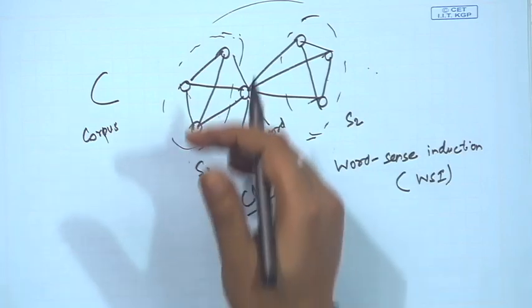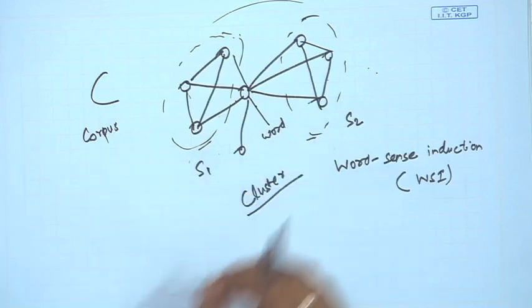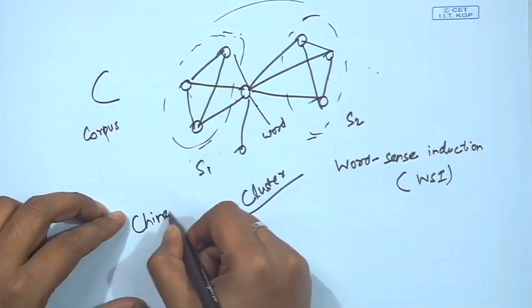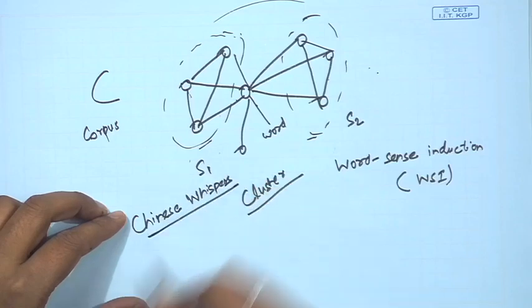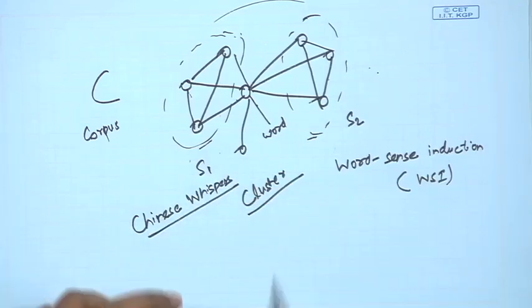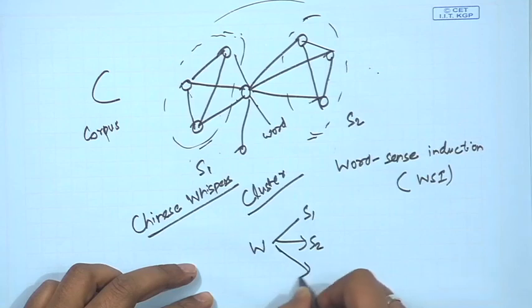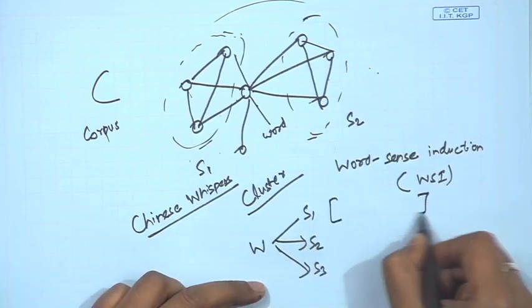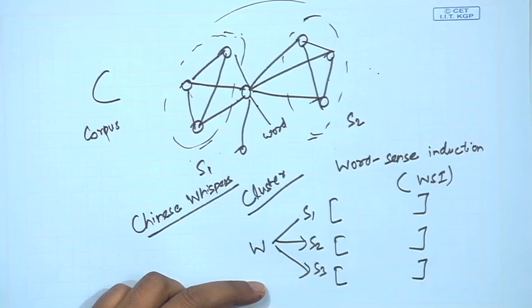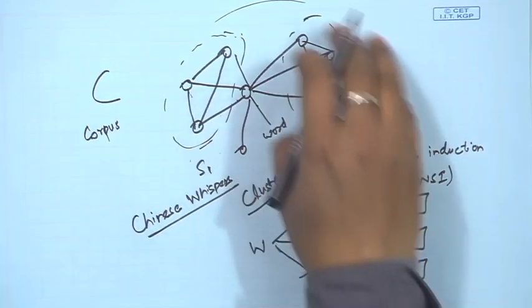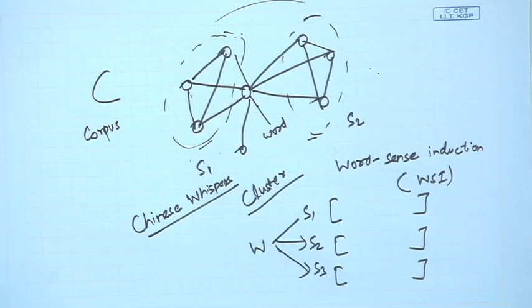There are many ways to do WSI because there are many graph clustering methods available. For example, Chinese Whispers is a very popular algorithm. After induction, for each word you get senses S1, S2, S3, and so on, each represented by a set of co-occurring words with weights. Now the problem I want to discuss is: can you find out if a word has acquired a new sense in some recent time period?